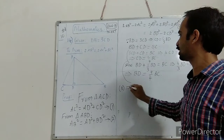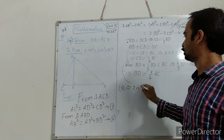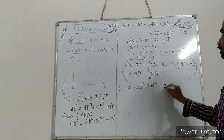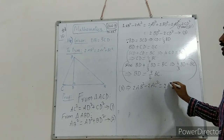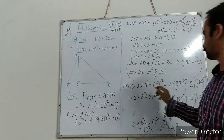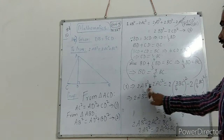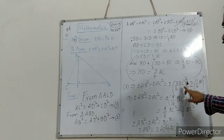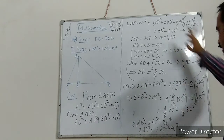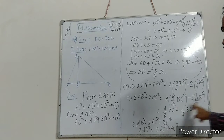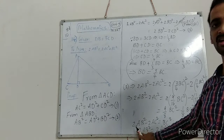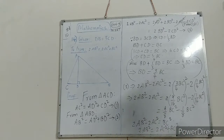Equation number 3 implies 2ab square minus 2ac square is equal to 2bd square minus 2cd square. Substituting bd as three-fourths bc and cd as one-fourth bc: 2 times (3/4 bc) squared minus 2 times (1/4 bc) squared. On simplification, we get bc square, so 2ab square is equal to 2ac square plus bc square.